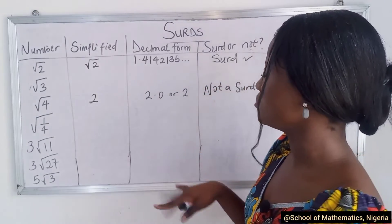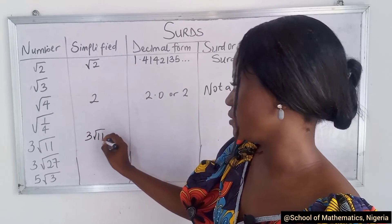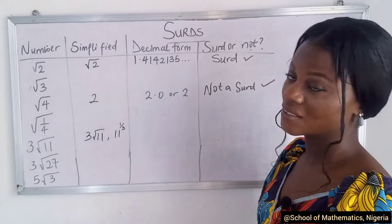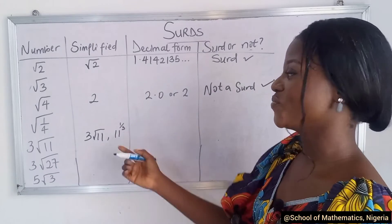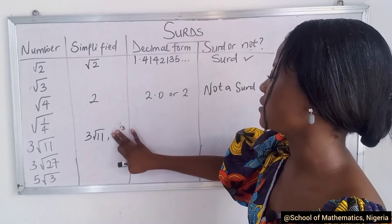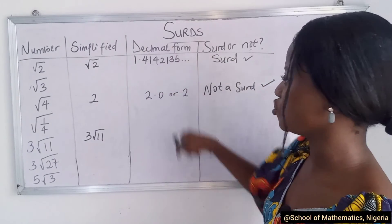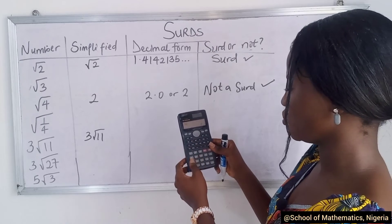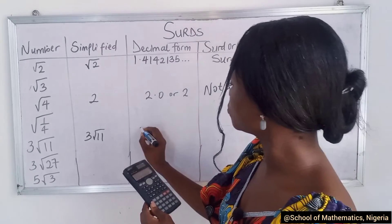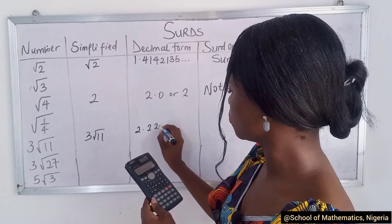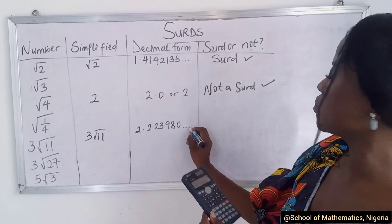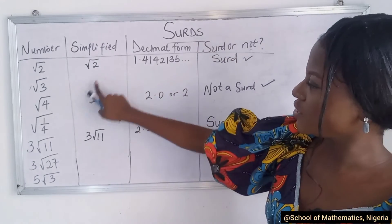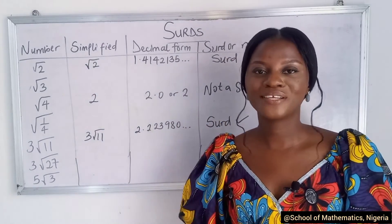Let me do one more — the cube root of 11. In its simplified form, if you tried to write it as 11 to the power of one-third you'd get confused, so you rather just write it as the cube root of 11. So let's use our calculator: press shift, then the square root sign, then put in 11. We get 2.22398... and it keeps going. So what does this tell us? It's a surd!